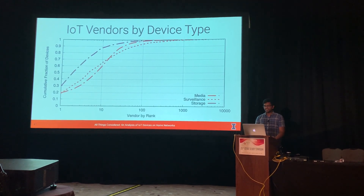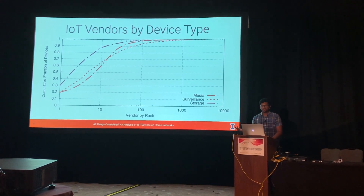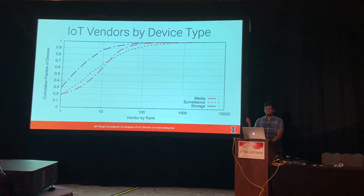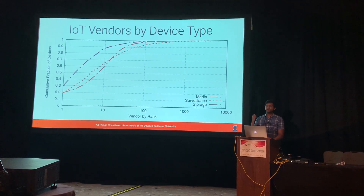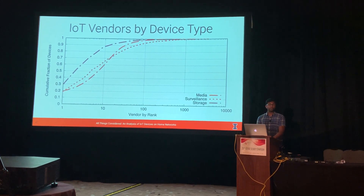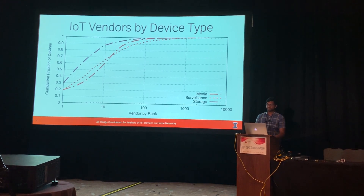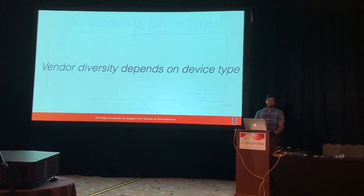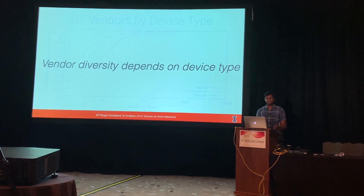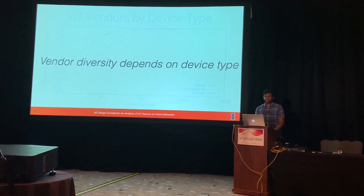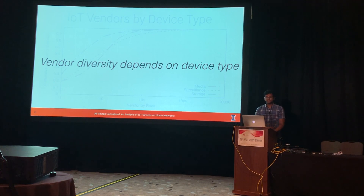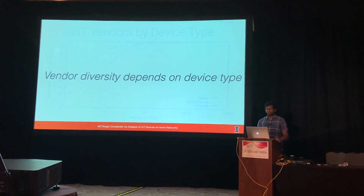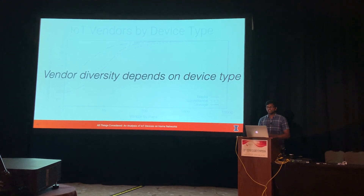Conversely, other device types are far more heterogeneous. Media devices are the most heterogeneous device type in our dataset, with the top 10 manufacturers accounting for only 60% of all devices, and surveillance devices are a close second. There are obviously major players — for example, HikVision, a Chinese CCTV company, accounts for 18.4% of all surveillance cameras globally with a strong presence in almost every region. But broadly, vendor diversity depends on device type, partly because different regions prefer different vendors. In Western Europe, the most popular media vendors are French companies like Sagemcom and Free, which manufacture set-top boxes and DVRs, while in the U.S. the most popular media vendors are Google, Amazon, and Apple.